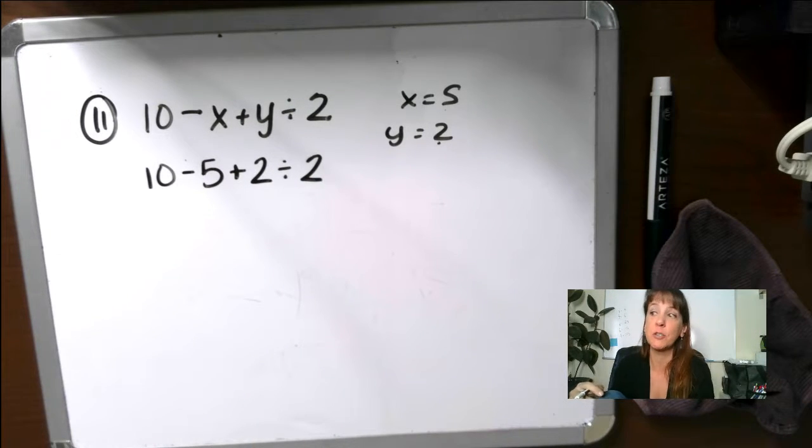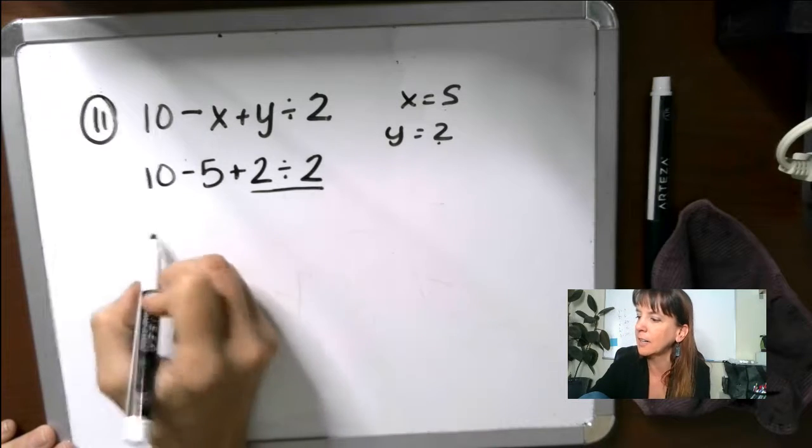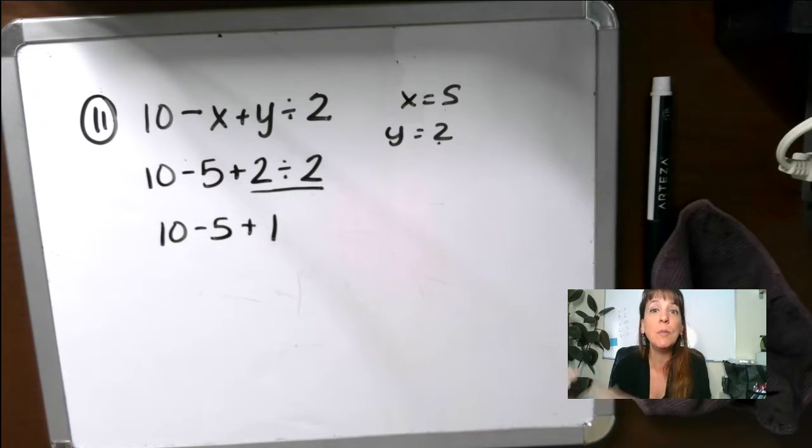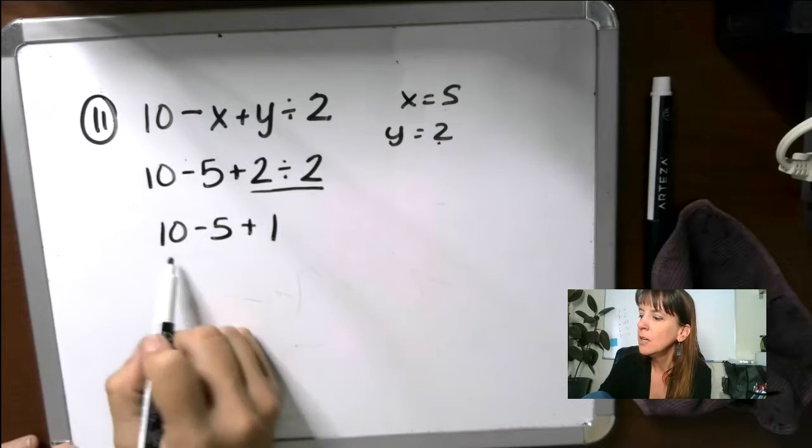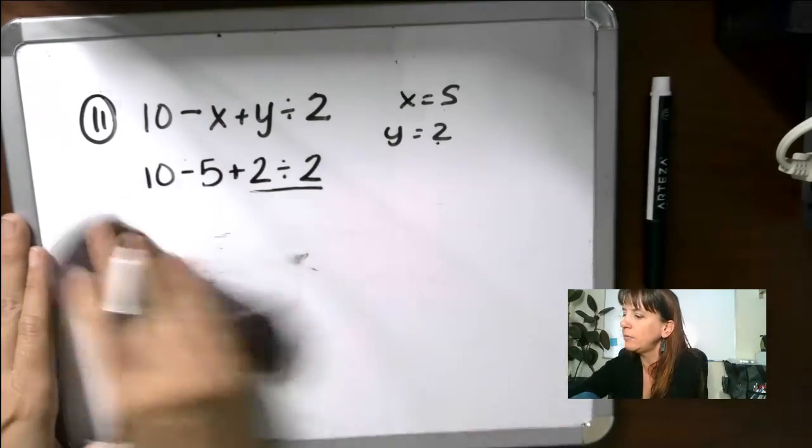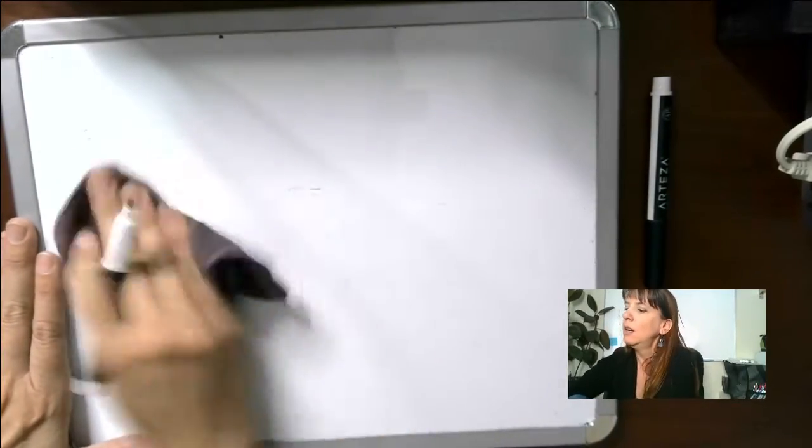Again, we want to do our multiplication and division first. So we're going to do this guy right here. So we have 10 minus 5 plus 1, and now we do our addition and subtraction in order. So we've got this guy here, 5 plus 1, which equals 6.